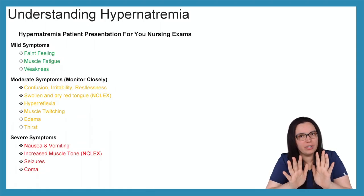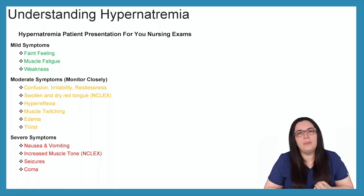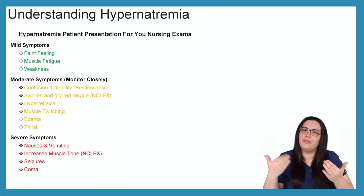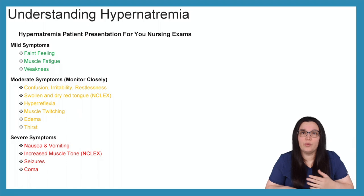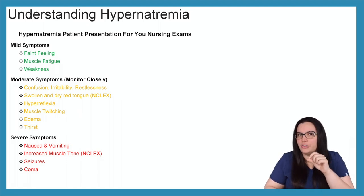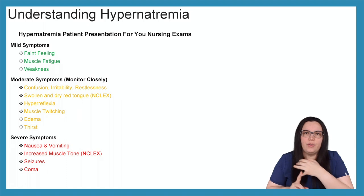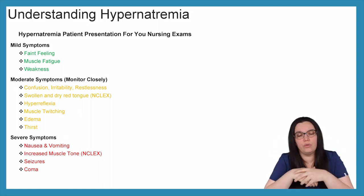So what do you really need to know for your nursing exam? You need to know your mild, moderate, and severe symptoms. For mild symptoms, you'll see a faint feeling — they feel like they're going to pass out — as well as muscle fatigue and weakness from all that sodium causing muscle contraction. With moderate symptoms, patients become confused, irritable, and restless. A swollen, dry, red tongue is a huge NCLEX tip for hypernatremia — make sure you know that, as it will likely be on your nursing school exams.